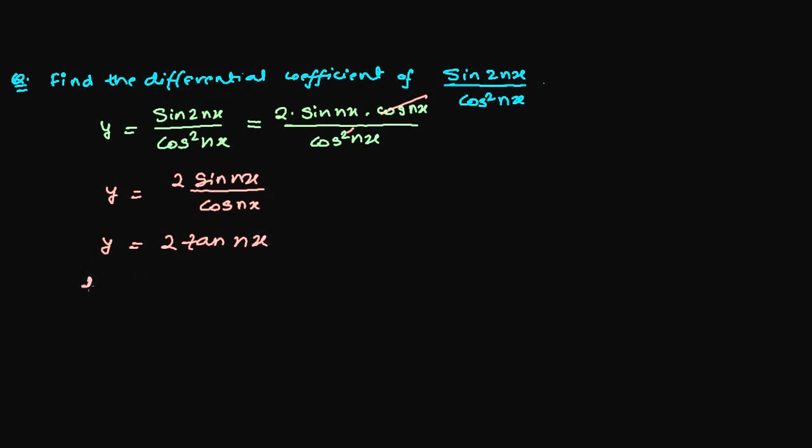And now differentiate both sides. So differentiating both sides with respect to x, you will get dy over dx equals - now, 2 is a constant so it is coming outside - derivative of tan nx with respect to dx.